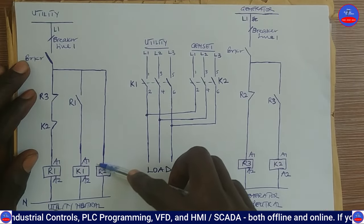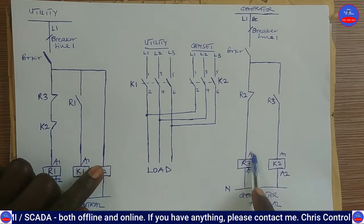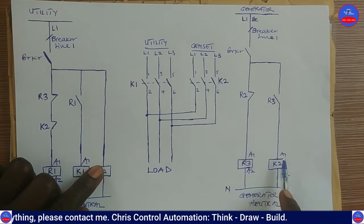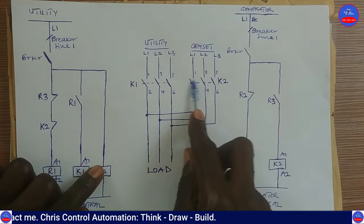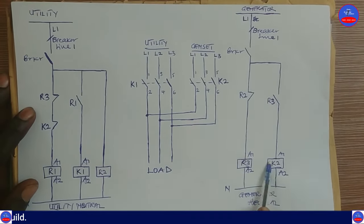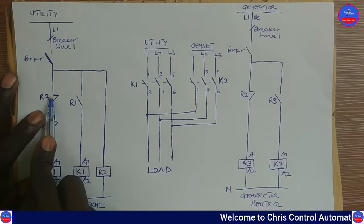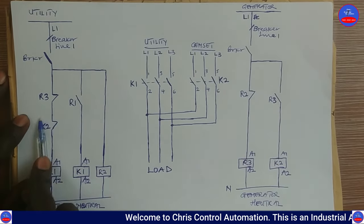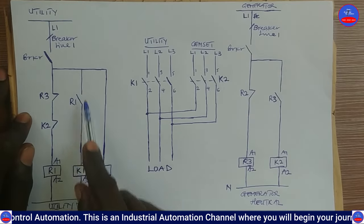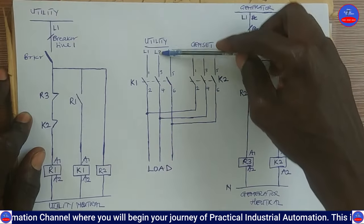R2 energizes through the utility line. When R2 energizes, it opens its contact, which causes R3 to de-energize. When R3 de-energizes, its contact opens, which causes K2 to de-energize. When K2 de-energizes, its contacts open and the generator power is cut off. At the same time, as K2 and R3 de-energize, their contacts close back, allowing R1 to energize again. R1 energizes, closes its contact, K1 energizes, its contacts close, and the utility power is applied back to the load.